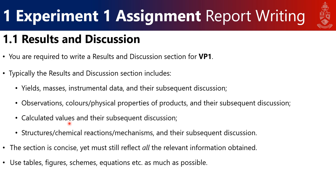Calculated values are another consideration — you saw that with CMY 282, where you sometimes had to collect a lot of data, report it, and then calculate something from it, which is also still a result. For example, if you plot boiling points against mole fractions and read off an azeotropic point, that's still a result you can discuss. Also important for Experiment 1 are things like structures, chemical reactions, and mechanisms — all the schemes, redox reactions, and equilibria we looked at, and how they fit with your observations.